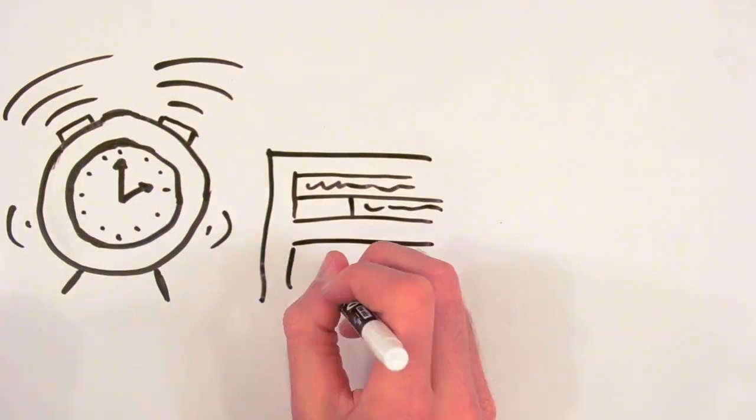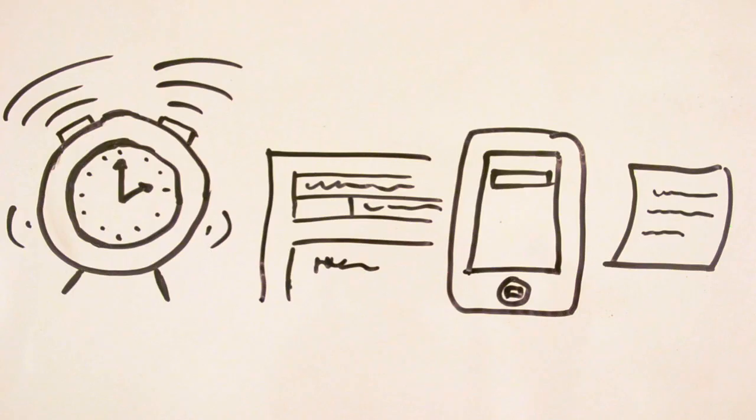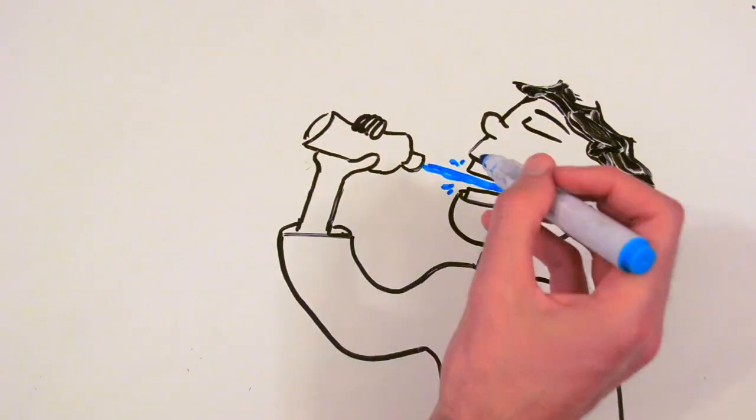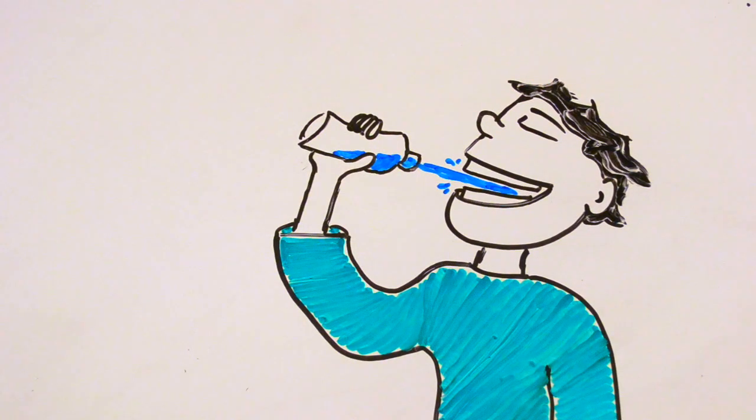Tip number four, setting reminders. Whether an alarm, email, notification or sticky note, using some reminder throughout the day to drink water is a simple yet effective way that will help you set a good drinking habit.